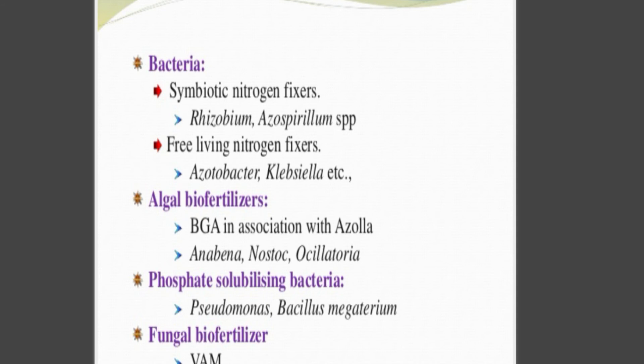For bacteria, we can identify bio fertilizers by name. There are symbiotic nitrogen fixers, such as Rhizobium and Azospirillum species. There are also free-living nitrogen fixers, for example Azotobacter, Clostridium, etc. Regarding algae, BGA is blue-green algae, found in association with Azolla. The second one is Anabaena. Oscillatoria is another example. The function associated with fungi is called VAM.